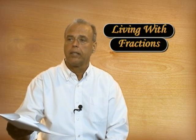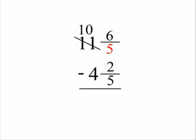Correct. Now what? Now we have 6 fifths so we can subtract 2 from 6 which leaves 4 fifths and 4 from 10 leaves 6. So our answer is 6 and 4 fifths.